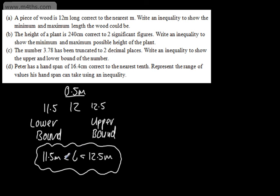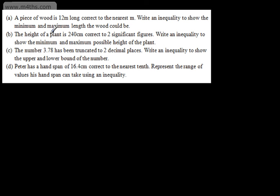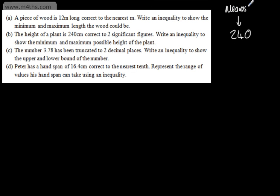Let's look at the next one. The height of the plant is 240 centimetres, correct to two significant figures. We're asked to write an inequality to show the minimum and maximum possible height of the plant. This is given to two significant figures. Looking at 240, the second significant figure is the 4, which is in the tens column. So what it's saying is this is given to the nearest 10.